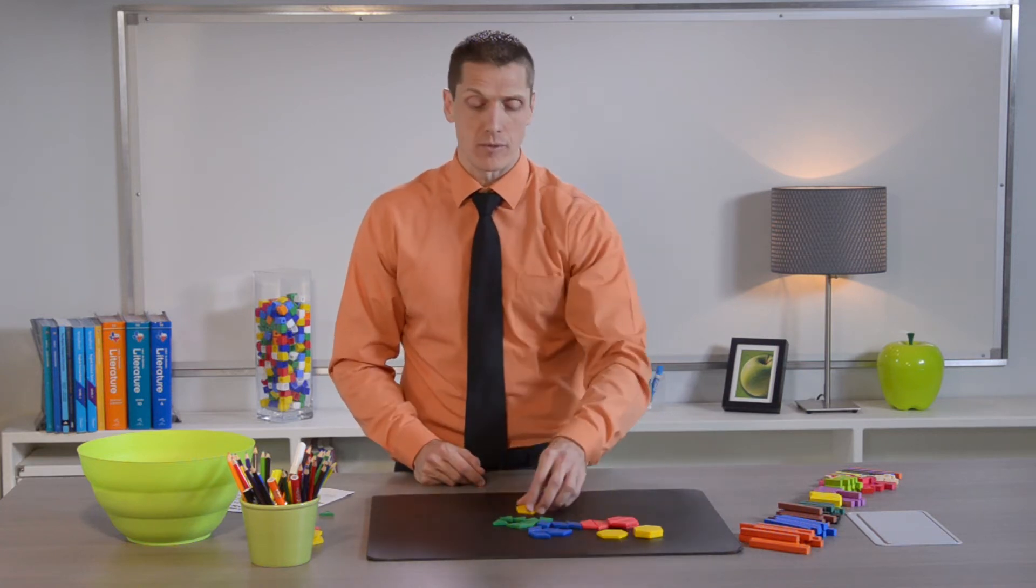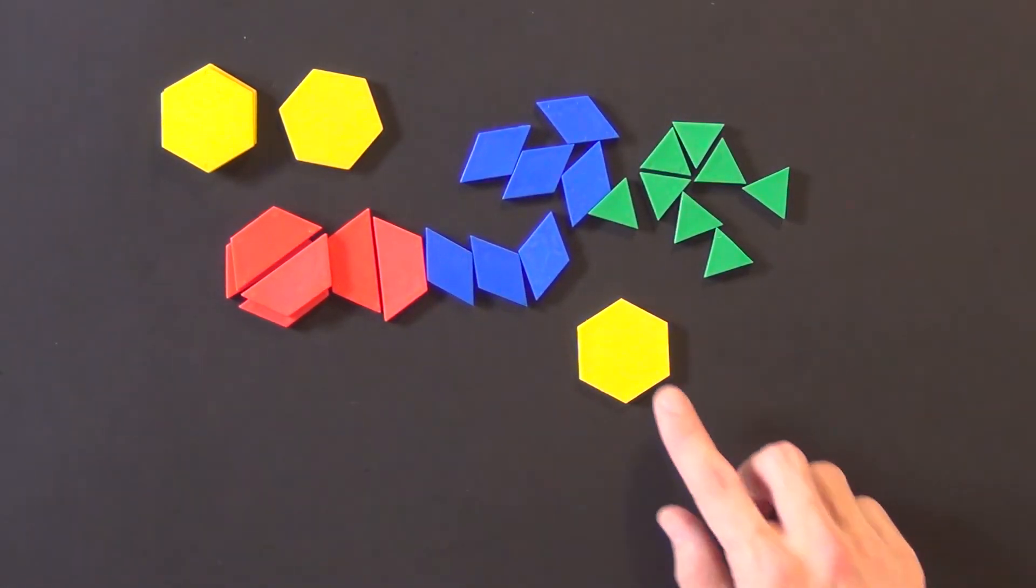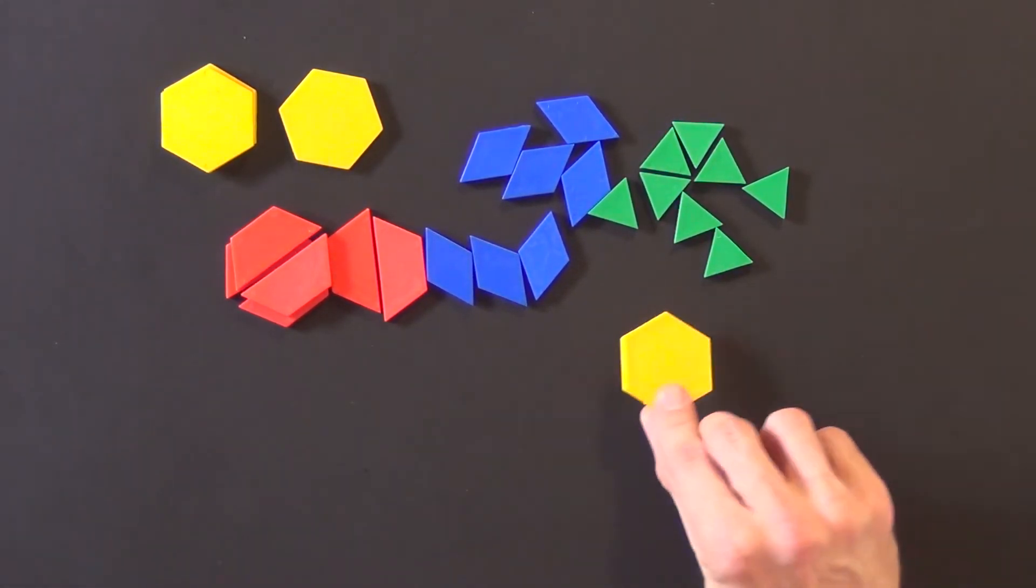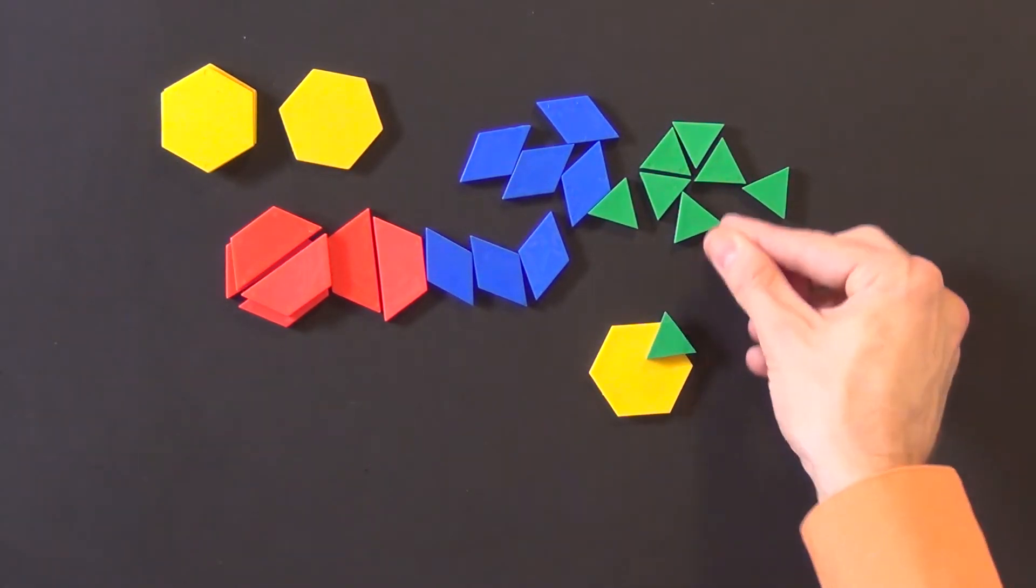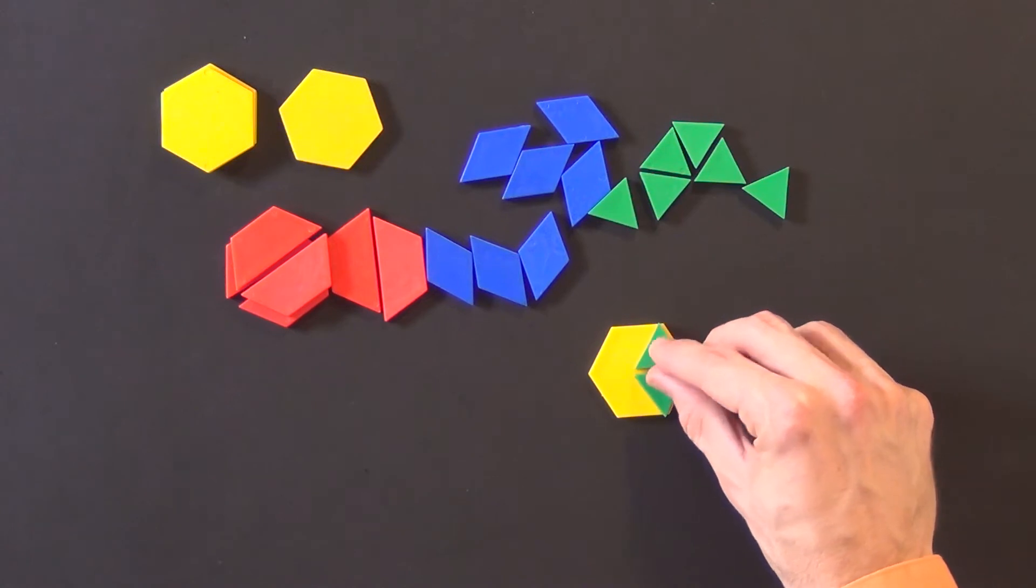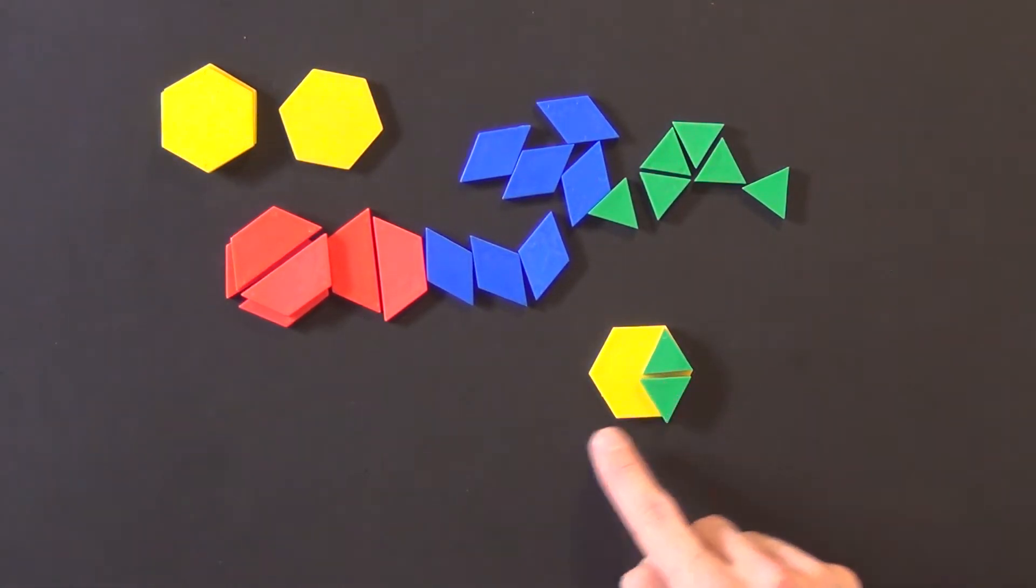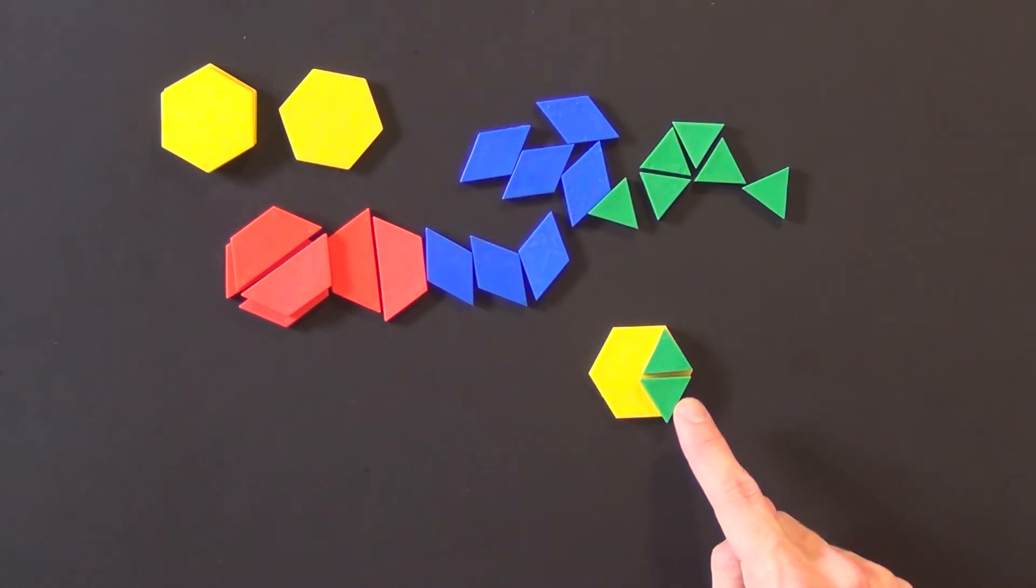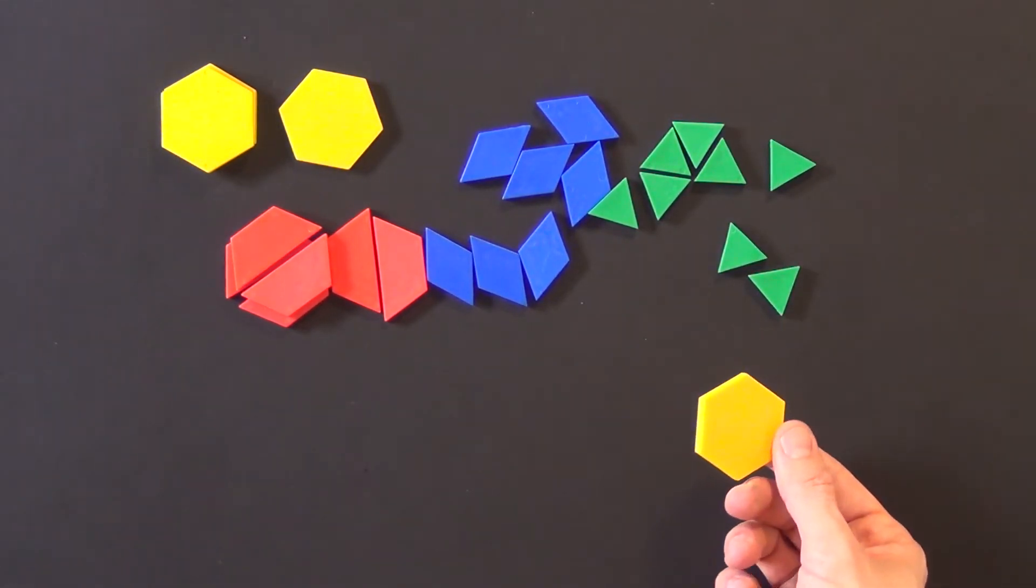Students may struggle to represent this using pattern blocks. Though they're familiar with the material, they might already know that the yellow hexagon can represent sixths, but we can't represent eighths with the yellow hexagon and it's the largest piece. So students might struggle with this.